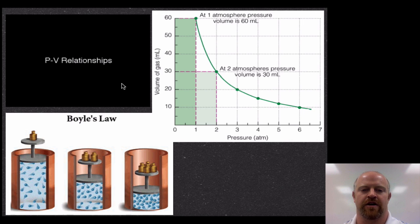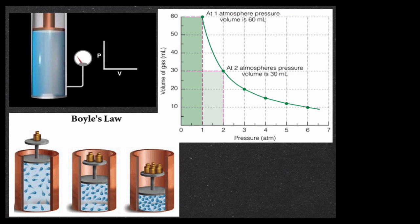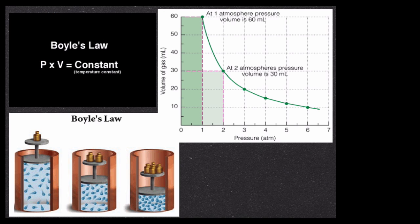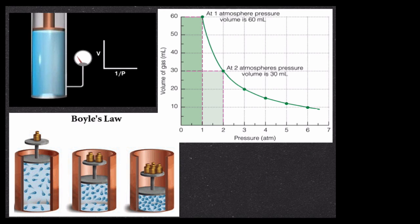A little video for you guys dealing with pressure-volume relationships. When the gas in this cylinder is compressed at constant temperature, the gas pressure increases as the volume decreases. Robert Boyle, experimenting with air, found that the product of the pressure times the volume is a constant at constant temperature. Dividing through by the pressure, we see that volume is linearly related to the reciprocal of the pressure.